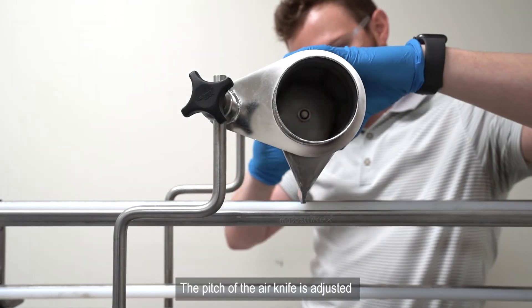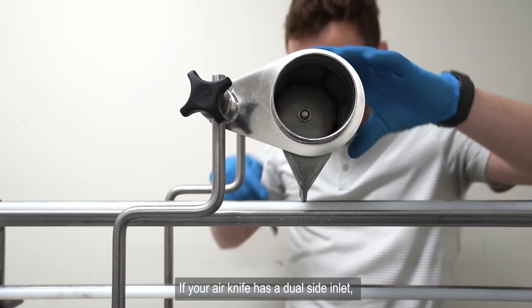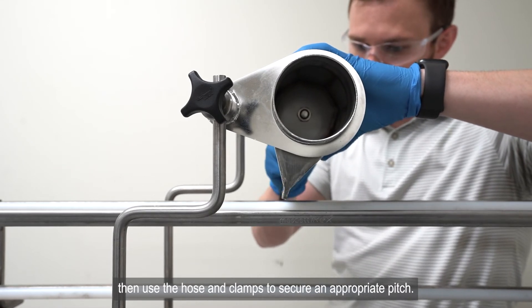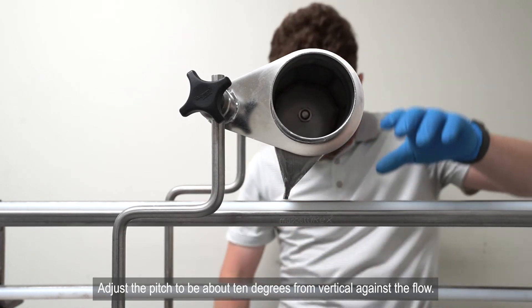The pitch of the air knife is adjusted using an Allen key and the M12 bolts found on the air knife. If your air knife has a dual side inlet, then use the hose and clamps to secure an appropriate pitch. Adjust the pitch to be about 10 degrees from vertical against the flow.